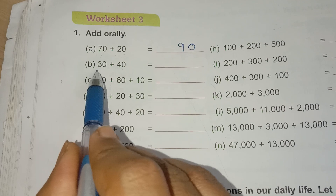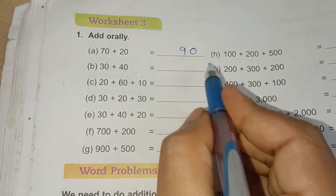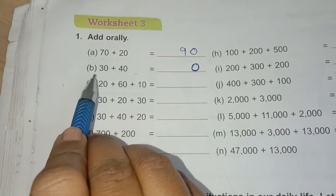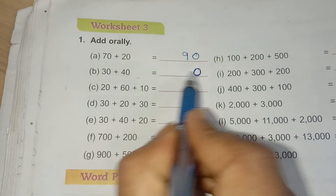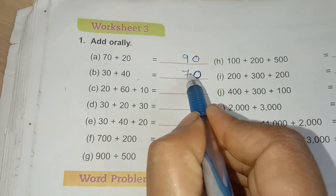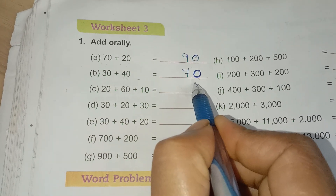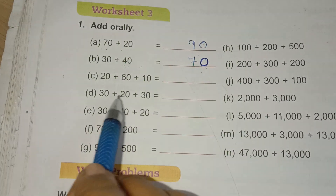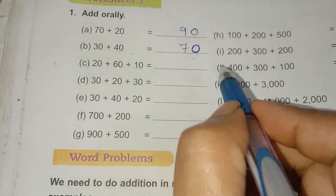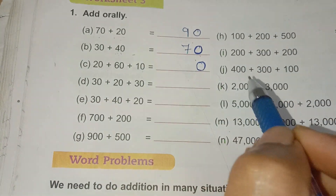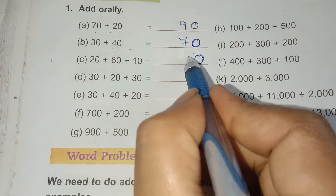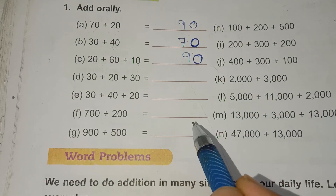The second one is also grouped as tens — it has a 1 and 0 in the right part. So I write 0 here; 0 plus 0 is 0. Then we add: 3 plus 4 is 7. So 30 plus 40 is 70 — very easy! Now here I have 3 numbers grouped as tens. I write 0, then add: 2 plus 6 is 8, 8 plus 1 is 9. So 90 is the answer.